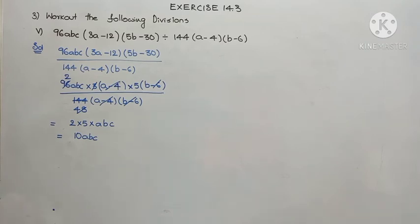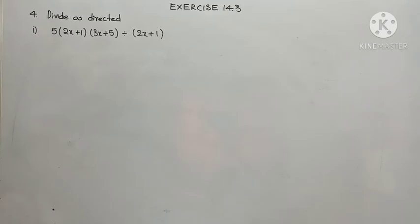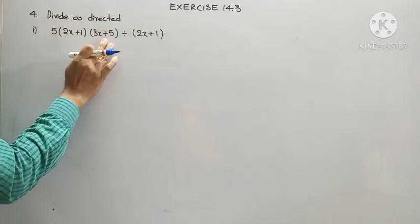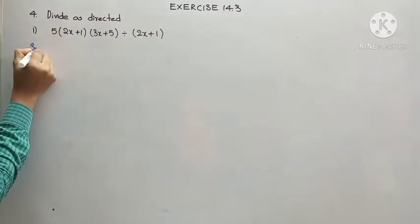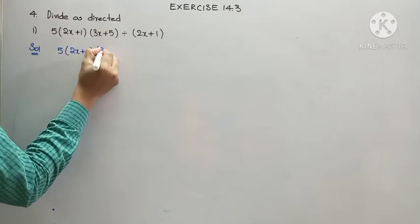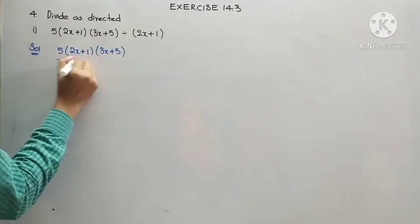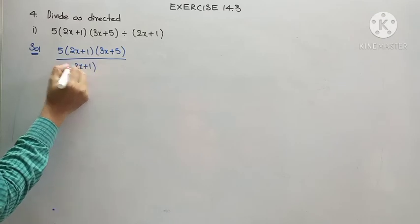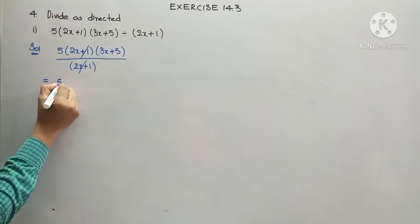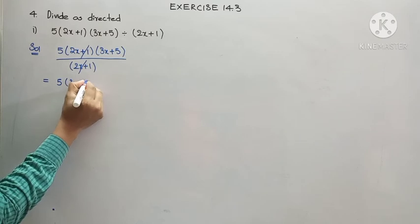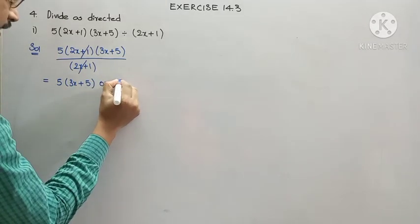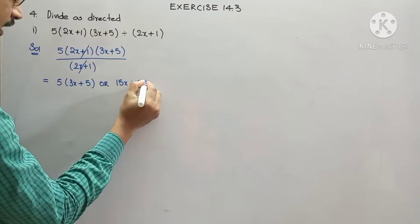Now let us move to the 4th Roman. It says divide as directed: 5 times (2x + 1) times (3x + 5), divided by (2x + 1). Our focus is on the divisor. Since (2x + 1) already appears in the dividend, we can directly cancel it, leaving 5 times (3x + 5). You can leave it as that, or expand it to get 15x + 25.